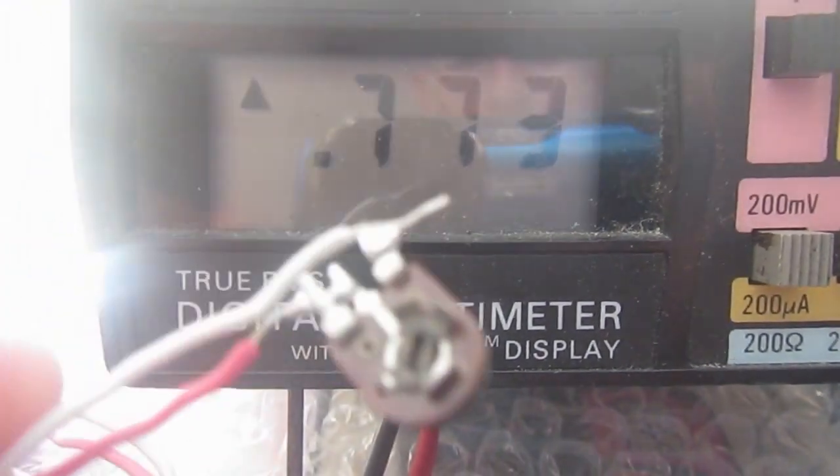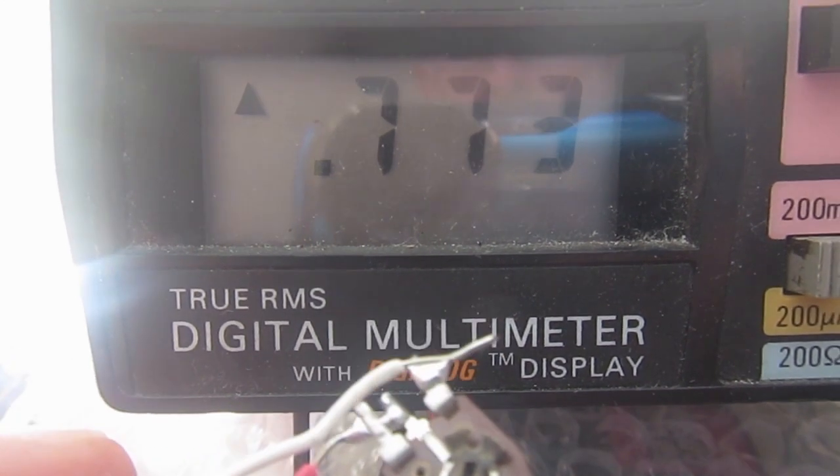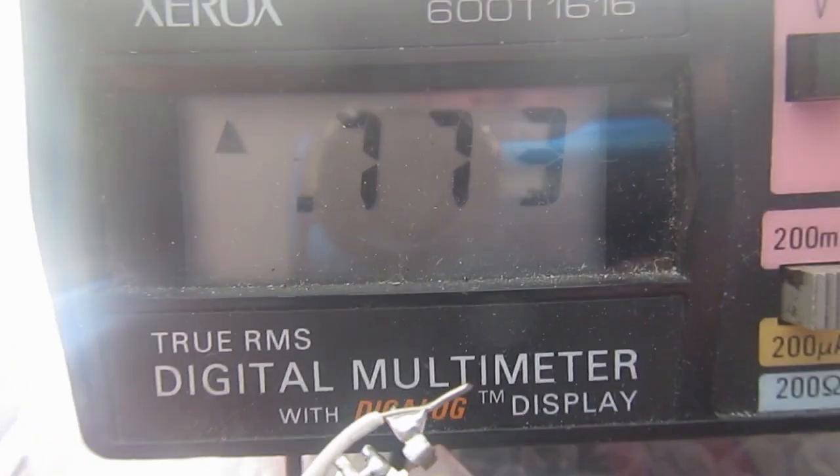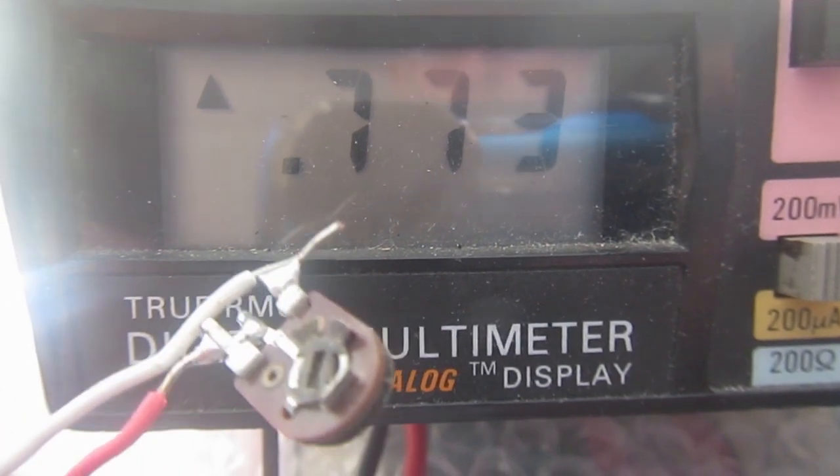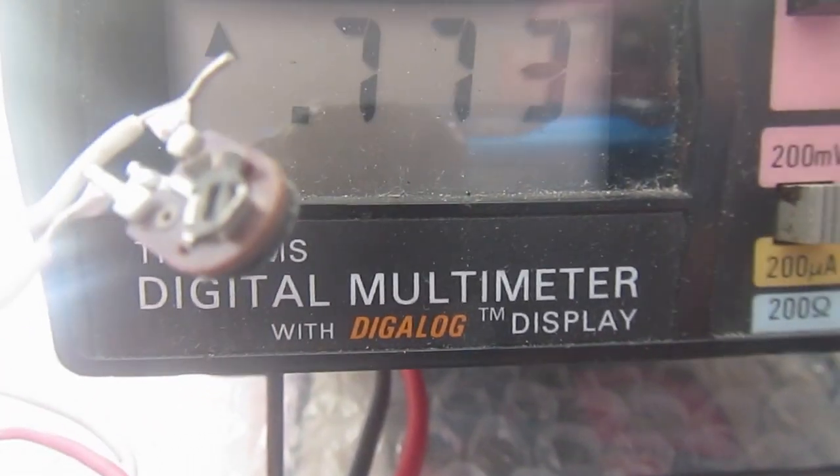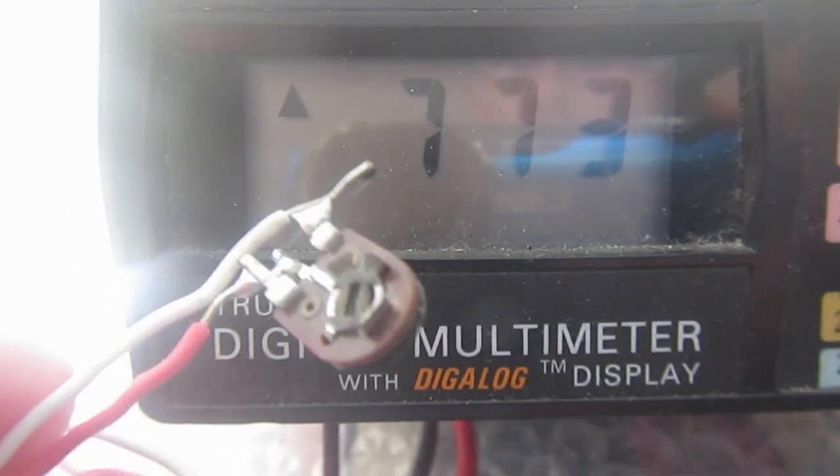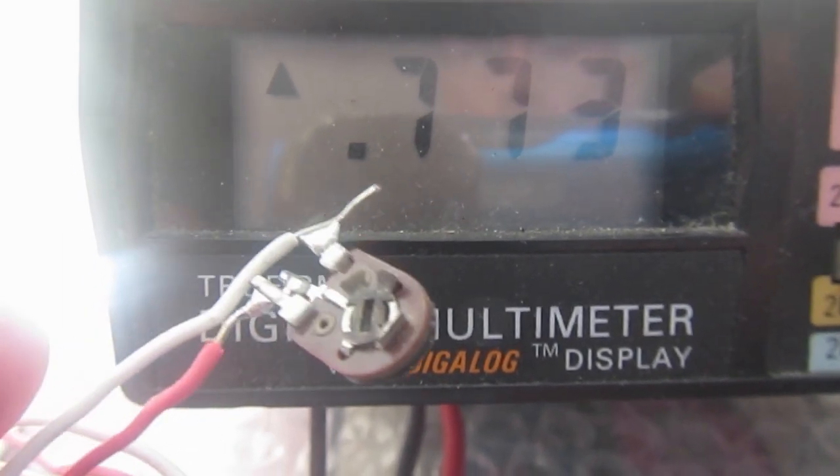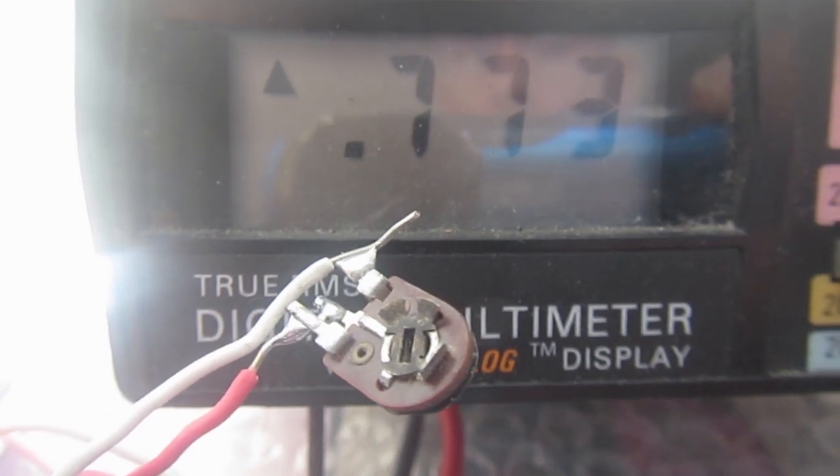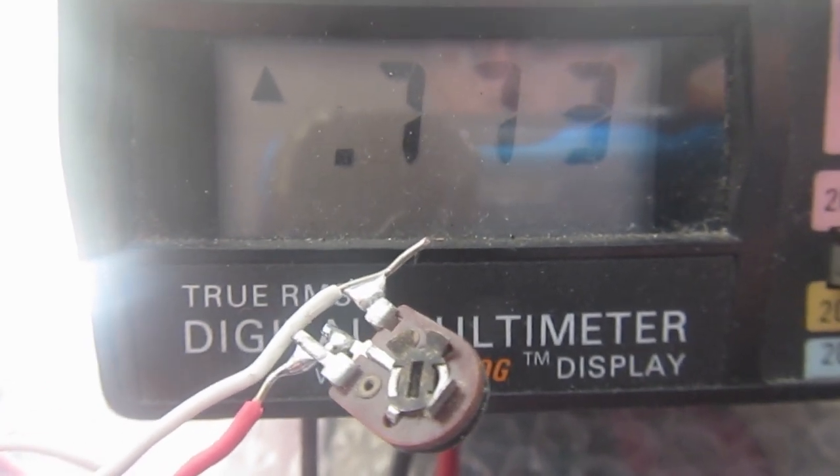So the trimmer is measuring at the moment 773 ohms, which is a good value, about what Jeff found on his video on the research. So I say the circuit is working well enough.